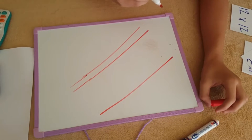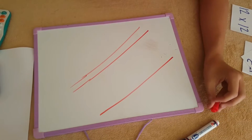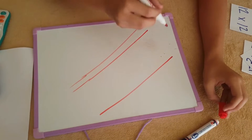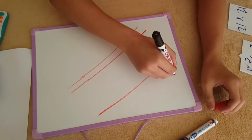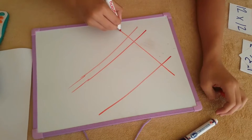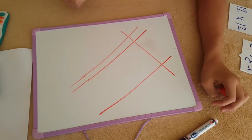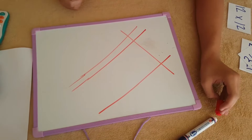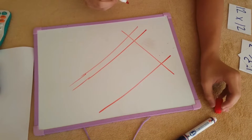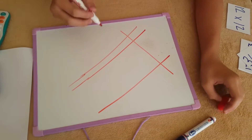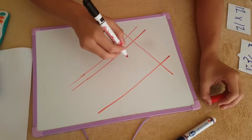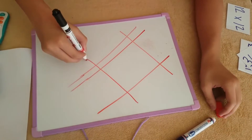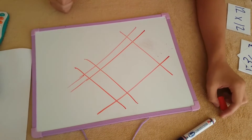The multiplier of 12 is also 12, so the first digit is 1. We write one line intersecting the first lines we made. The next digit of 12 is 2, so we give a little space and write two lines just like this.